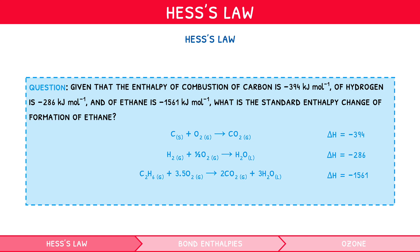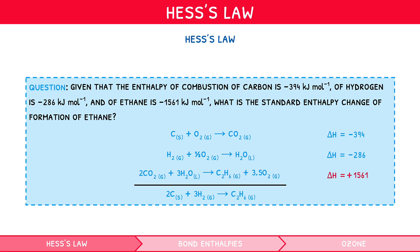Now write an equation for the enthalpy of formation of ethane. Remember your definition — it's formation of 1 mole. So: 2C + 3H₂ → C₂H₆. We can flip the last equation so C₂H₆ is on the correct side — remember, this flips the sign of enthalpy. Now we can multiply the first equation by 2 and the second by 3 to balance the reactants. Don't forget to multiply their enthalpy values too. Then add together and cancel to give the enthalpy of formation equation.